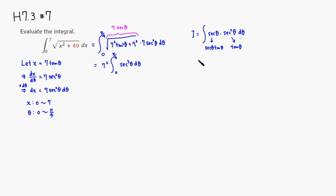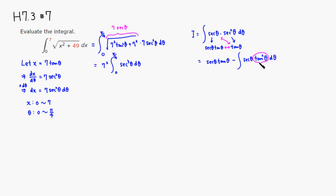Applying integration by parts, the uv term — multiplying diagonally — gives secant of theta times tangent of theta, minus the integral of secant of theta times tangent squared of theta dθ. We can rewrite tangent squared as secant squared of theta minus 1.